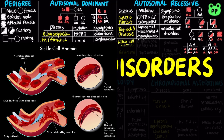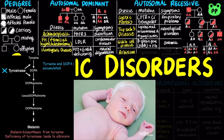Sickle cell disease is caused by the substitution of a single amino acid in the hemoglobin protein in red blood cells, leading to anemia. Albinism is an autosomal recessive disorder caused by mutation in the enzyme tyrosinase, which leads to a lack of pigmentation in skin and hair.